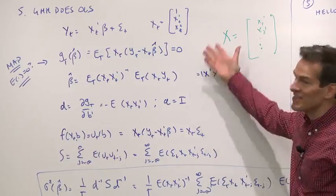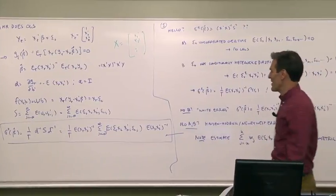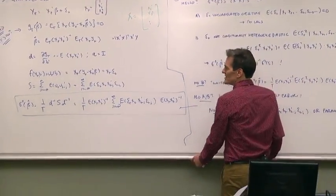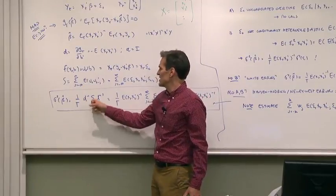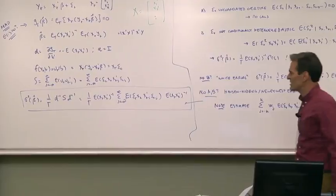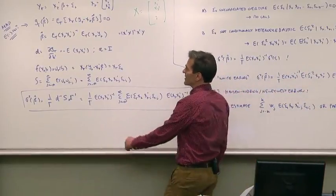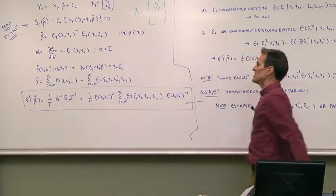Now we've got all our ingredients, the S, the F, the D, the G, all of these GMM notations that confuse you the first time around. So the standard error of the OLS regression coefficient is just D inverse S, D inverse prime. The A is, again, with the identity matrix. Or putting the ingredients together, there's our D, there's our S, there's our D prime.